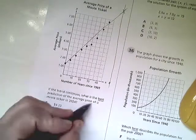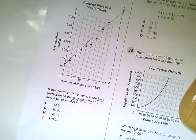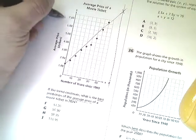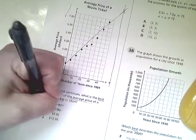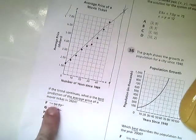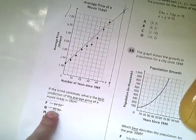Now, it says what is the best prediction of the average price of the movie ticket. Here's $7. So that's $7. Well, it's obviously above $7. So anything below $7 is out. So it's not going to be $4.20. It's certainly not going to be $6.90.